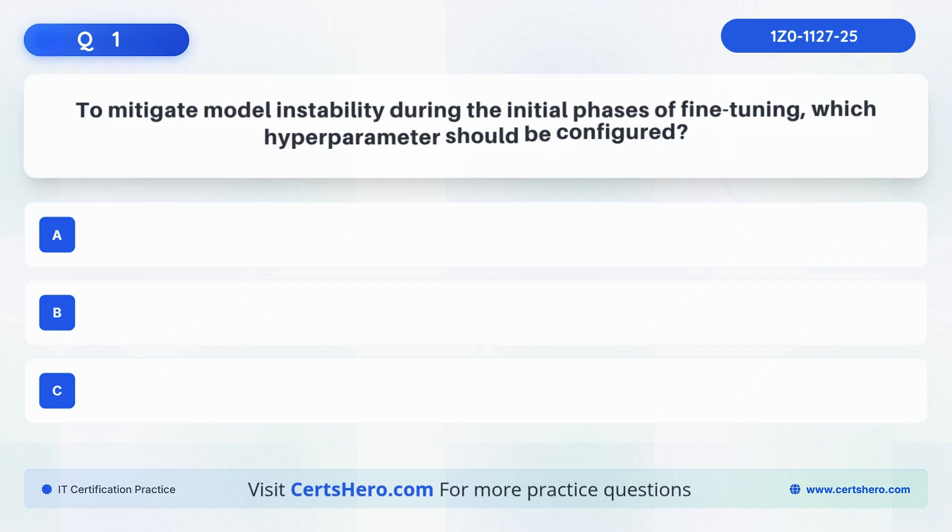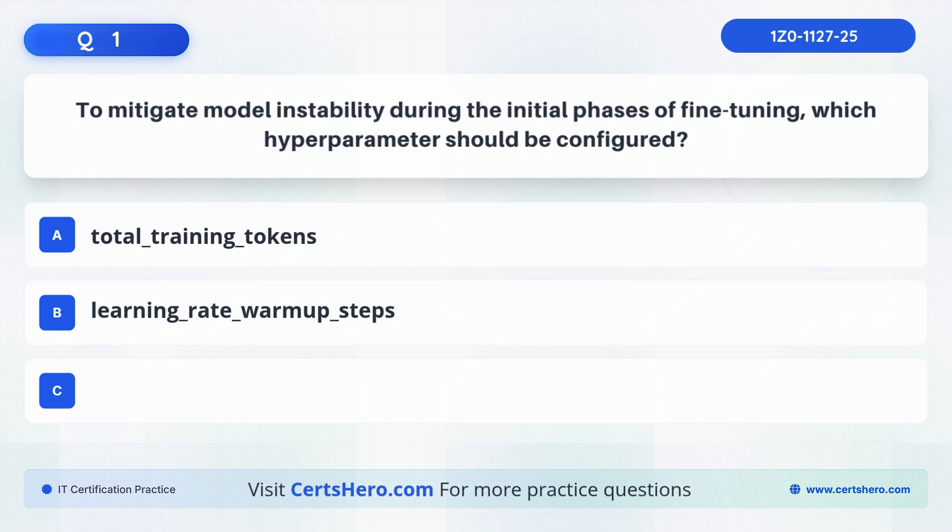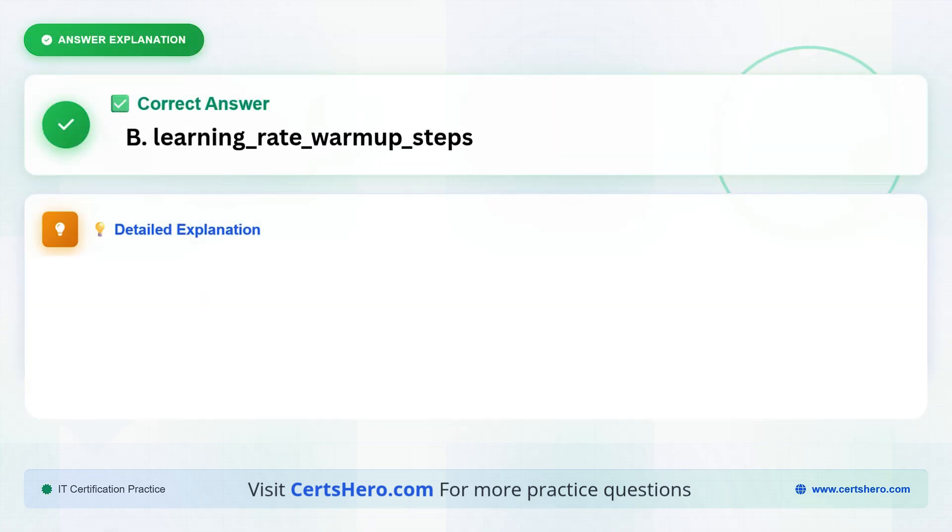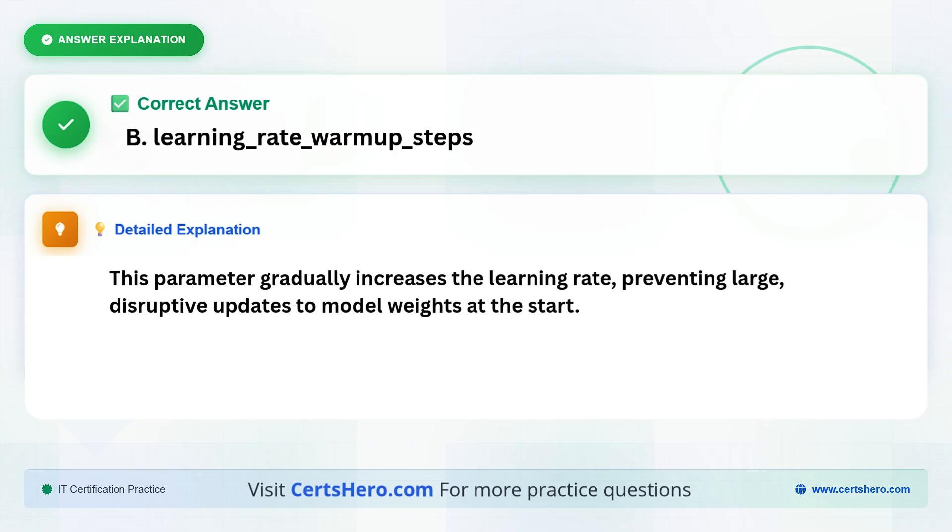To mitigate model instability during the initial phases of fine-tuning, which hyperparameter should be configured? Is it Total Training Tokens, Learning Rate Warm-up Steps, or Early Stopping Patients? The correct answer is B, Learning Rate Warm-up Steps. This parameter gradually increases the learning rate, preventing large, disruptive updates to model weights at the start.